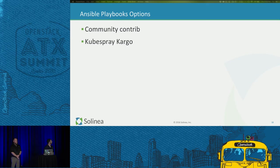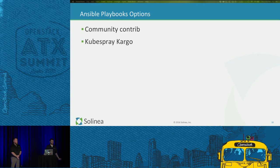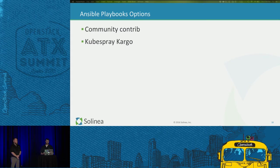As far as Ansible playbook options, there are a couple of different approaches. The first is the community contrib repos under the Kubernetes GitHub repo — we found those work but are very Red Hat specific, mostly maintained by Red Hat guys, don't work with Ubuntu, and are single master with no HA. Then there's KubeSpray Cargo — those are the two that seemed well supported and actively being worked on with some community around them. Cargo supports multi-master, creating an etcd cluster, Ubuntu, the RHEL family of OSes, and CoreOS as well.